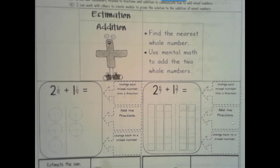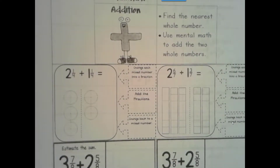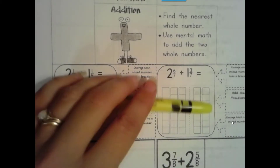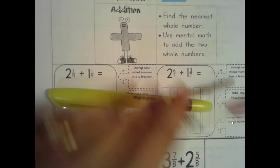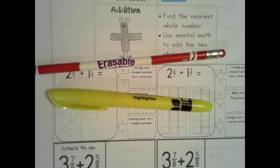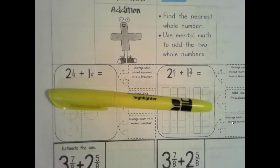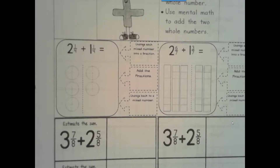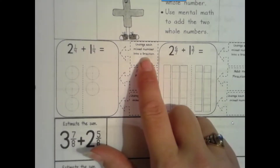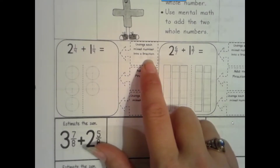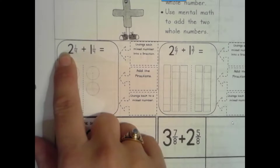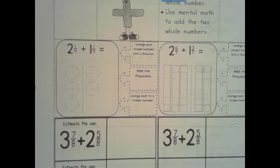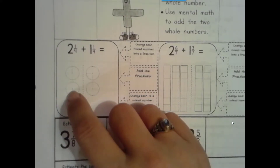We're also going to add. Go ahead and get a highlighter, colored pencil, or different color pen. I like the highlighter best because it won't cause problems on the other side of our notes. The first step is to change each mixed number into an improper fraction. Here we need to change our mixed number into an improper fraction. I have two whole circles and one fourth.